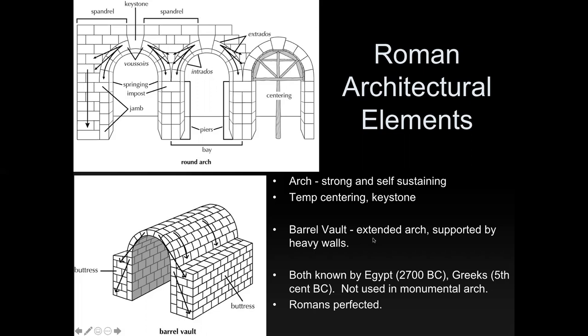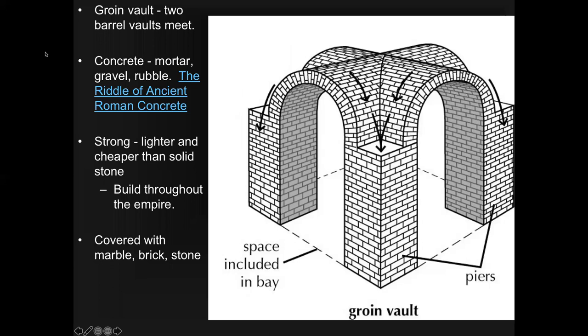This arch form was known by the Egyptians, at least going back to 2700 BCE — even before the pyramids — and by the Greeks in the 5th century BCE. But they didn't use a monumental arch; they had them as kind of scientific experiments. The Romans perfected the use of the arch along with their use of materials. The groin vault is when you take two barrel vaults and they meet in the middle, which allows a pretty expansive space without walls as thick as with post and lintel. The easy way to tell if there's a groin vault: if you're standing on the ground and look upwards and see an X on the ceiling, you have a groin vault.